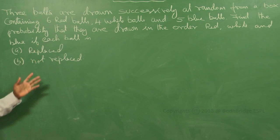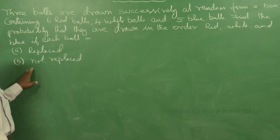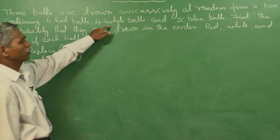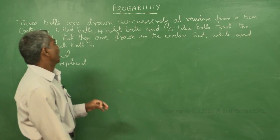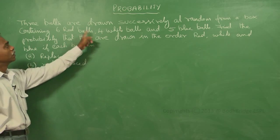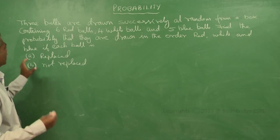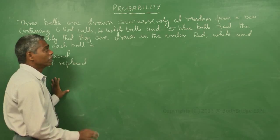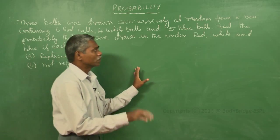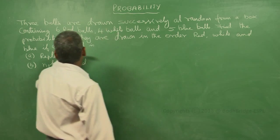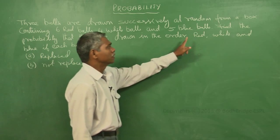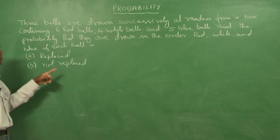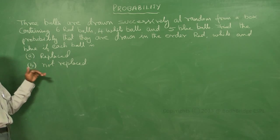The same problem is given in 2 different cases. Now, there is a box in which there are balls of 3 different colours. Our aim is to draw only 3 balls from the total at random — that means without any predetermination. The question is: the balls should be drawn in this order — red, white and blue. That is very important. First ball should be red, second is white, and the third will be blue. In this order only we are going to take the balls.